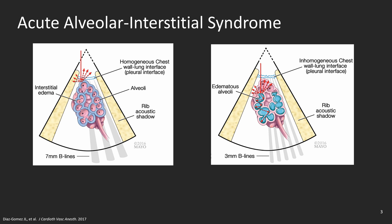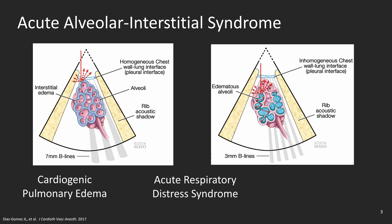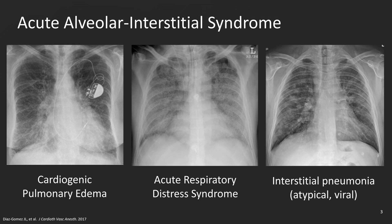Such conditions include cardiogenic pulmonary edema, acute respiratory distress syndrome, and interstitial pneumonias with atypical and viral etiologies including influenza and COVID-19. What these three disease states have in common is the increasing lung density due to increasing fluid content in the interstitial and alveoli. That is why they are seen on chest x-ray as bilateral peripheral diffuse infiltrates, whether interstitial or alveolar or both.